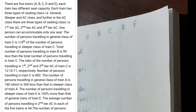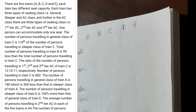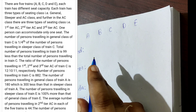The third seating class is AC class. This AC class is again divided into three types: First Tier AC, Second Tier AC, and Third Tier AC.